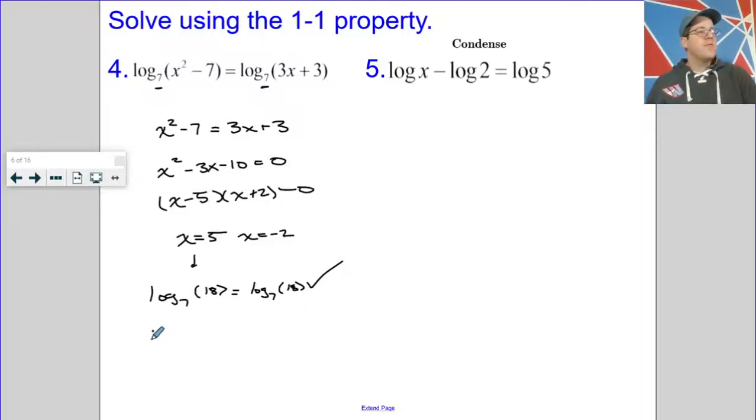When I plug in negative 2 though, I'm going to get the log base 7 of negative 3. And we're going to stop there and call that an extraneous solution. Because our argument can't be negative.